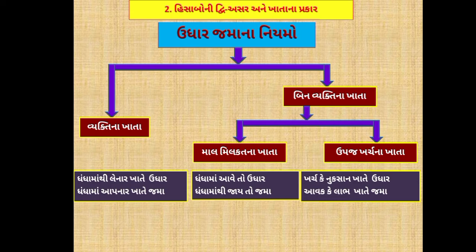ત્યાર બાદ, ઉપજ-ખર્ચના ખાતા: કોઈ આર્થિક વ્યવહારને કારણે ધંધામાં ખર્ચ કે નુક્સાન ઉદ્ભવે તો તે ખર્ચ કે નુક્સાન ખાતે ઉધાર કરવામાં આવે છે. અને કોઈ આર્થિક વ્યવહારને કારણે ધંધામાં લાભ, આવક કે ઉપજ થાય તો તે ખાતે તે રકમ જમા કરવામાં આવે છે. મિત્રો, આ ઉધાર-જમાના નિયમો છે - આ દ્વિ-નોંધ હિસાબી પદ્ધતિના મૂળ, આખી હિસાબી પદ્ધતિ રૂપી ઇમારતનું ચણતર આ અતિ પાયાના નિયમો ઉપર થયેલ છે.